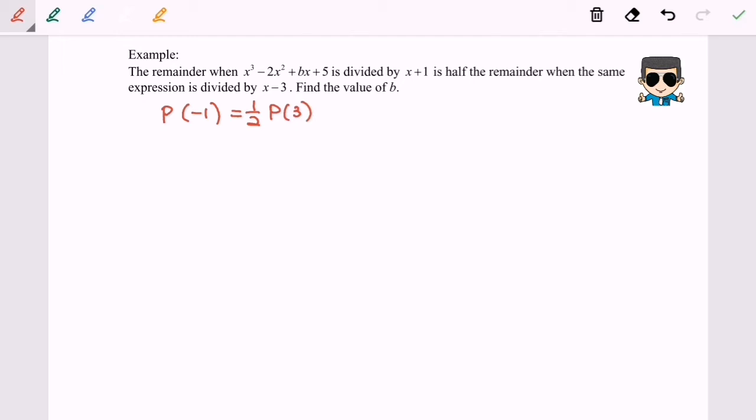So now we are going to create the equation by substituting the value negative 1 into the expression given. So for the left hand side, after I substitute the value, I will have -1 - 2 - b + 5, which is the left hand side.